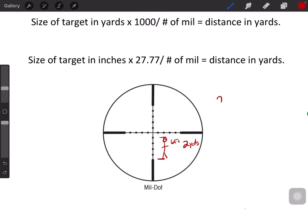Now you take that two yards, times it by 1000 as you can see here in the equation, and then you divide it by the number of mils the target takes up. In this case it would be one, two, three, four—four mils. So now you have two thousand divided by four, which equals five hundred.